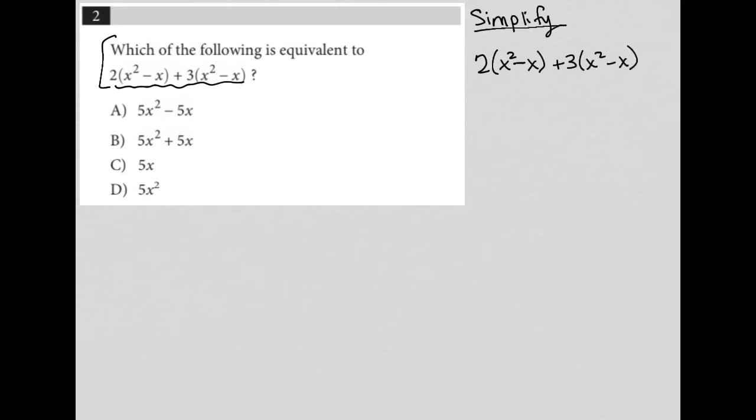The question just wants us to find which of the answer choices is equivalent. And I notice that none of the answer choices have parentheses. So I'm going to have to actually simplify this by distributing the numbers out in front of the parentheses into the parentheses themselves.